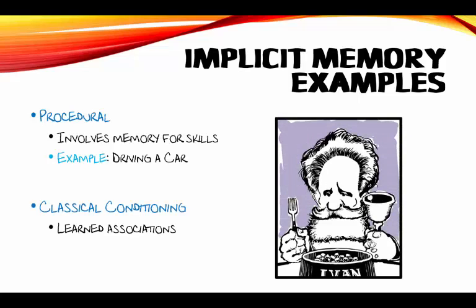The same actually goes for classical conditioning, something we talked about in the last chapter videos. Remember, classical conditioning is about learned associations, pairing things together. When Pavlov rang the bell, the dogs didn't think to themselves, 'Hey, the bell means food, I like food, I'm going to salivate.' Instead, he rang the bell and immediately the salivation happened. It was an almost subconscious or unconscious reaction.